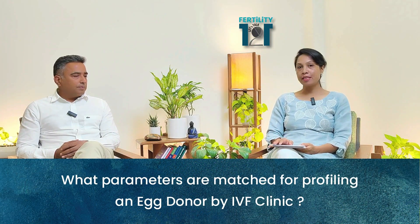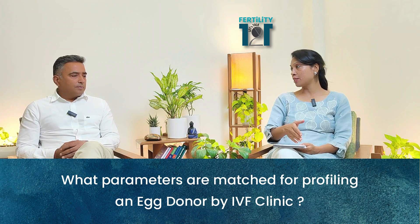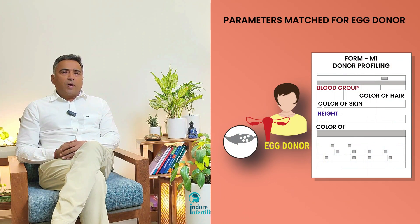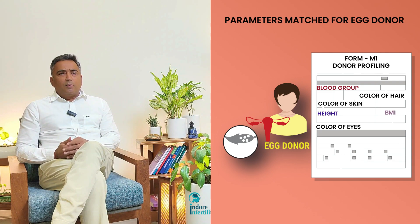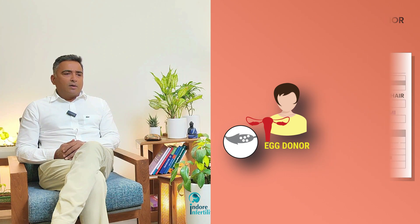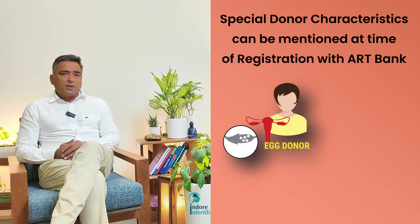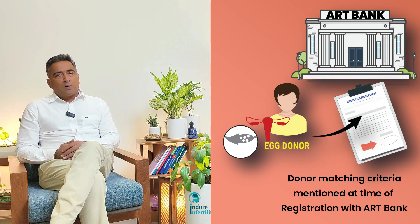What parameters would be matched for the egg donor when profiling a match for the couple? The standard profile usually contains blood group, colour of hair, colour of skin, colour of eyes, height, and body mass index. Apart from that, if there are certain particular characteristics you are looking for, those can be stated at the time of registration with the ART bank and they will try to match as many parameters as possible.